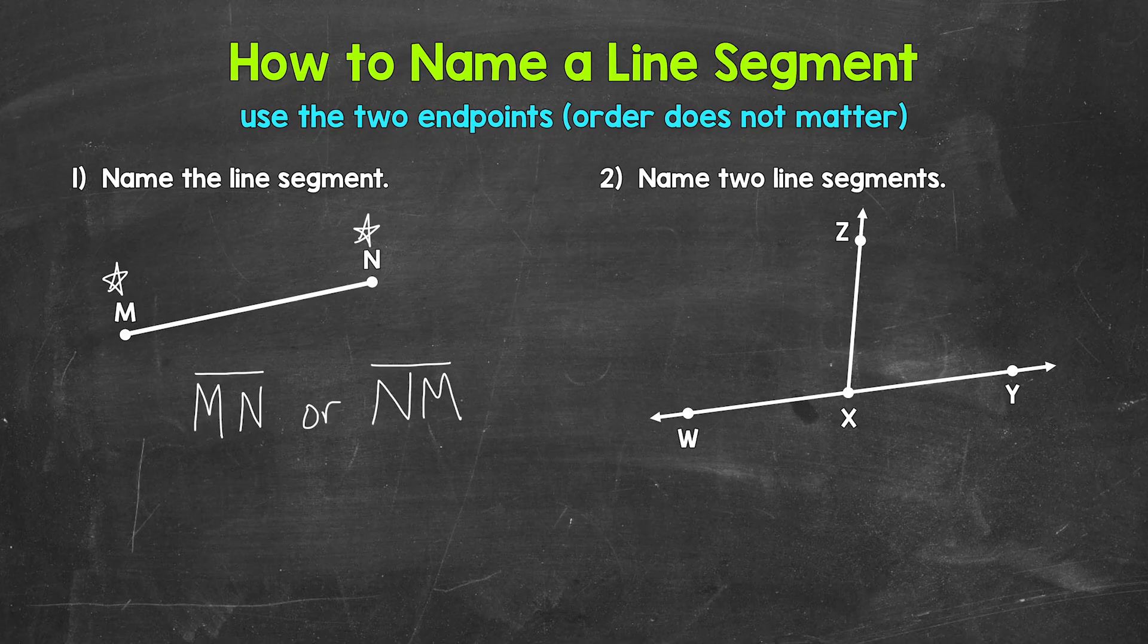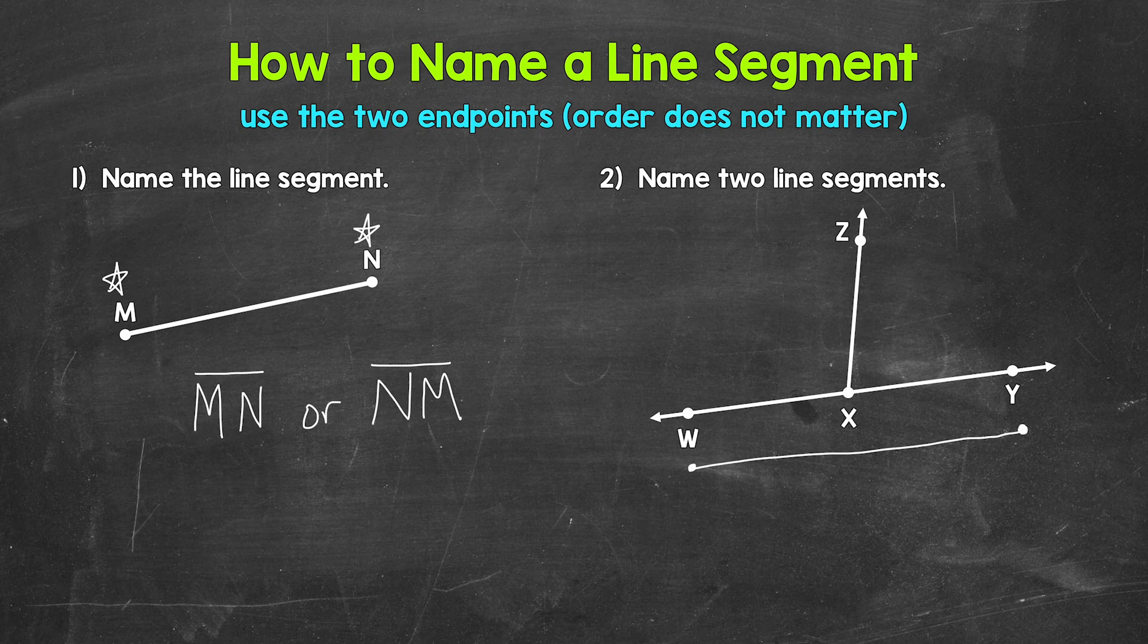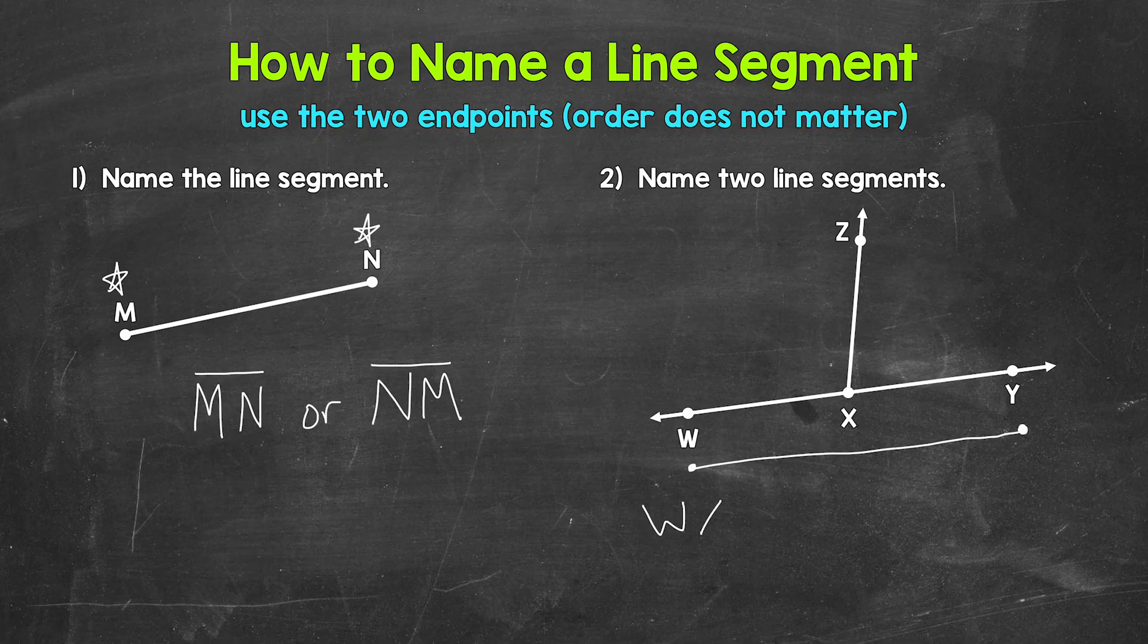For example, let's use W and Y first. So we have an endpoint here and an endpoint here. So we can name this line segment, line segment W, Y.